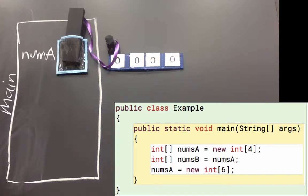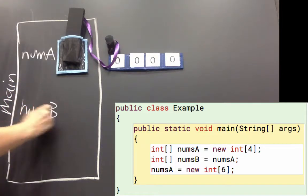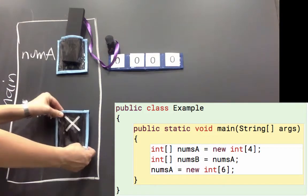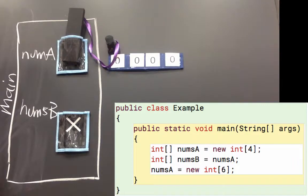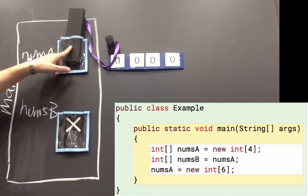Our next line says int array, or int square bracket square bracket, numsB gets the value of numsA. So that creates a variable numsB, and numsB is a variable that can hold a reference. It says int array numsB gets the value of numsA.